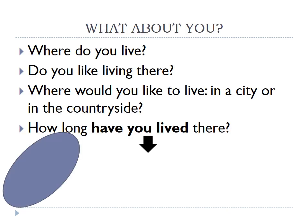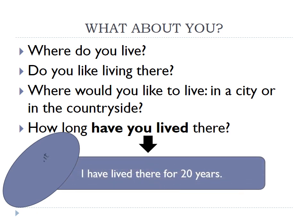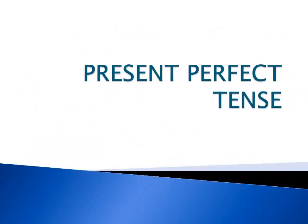We have learned some vocabularies of the city and the countryside. Now we move to the grammar focus of this topic. Before I explain, look at the questions: Where do you live? Do you like living there? Where would you like to live — in a city or in the countryside? And how long have you lived there? The grammar focus is present perfect tense. For example: I have lived there for 20 years. Present perfect tense describes actions which have been completed or done.